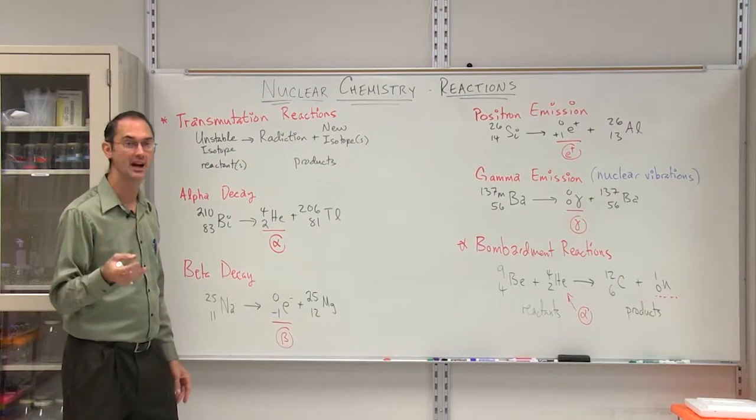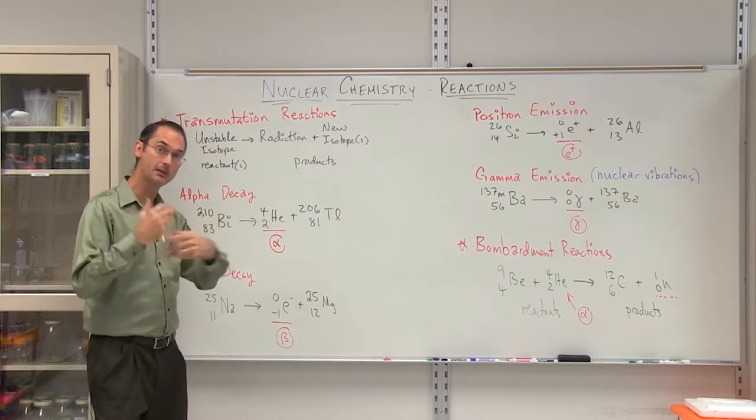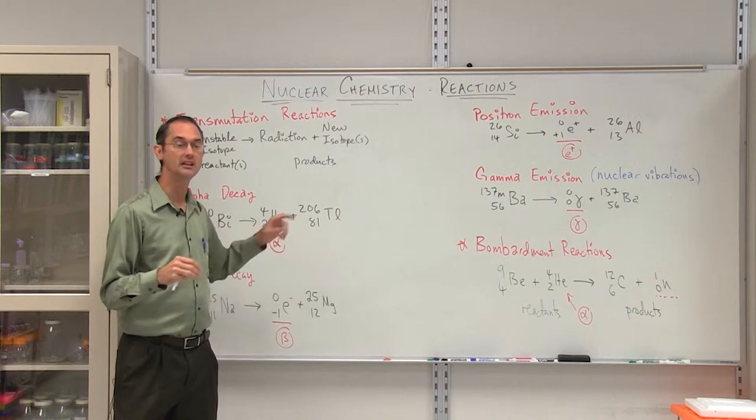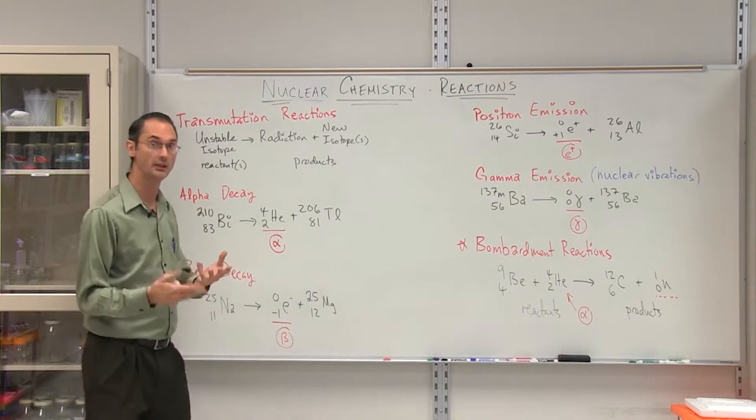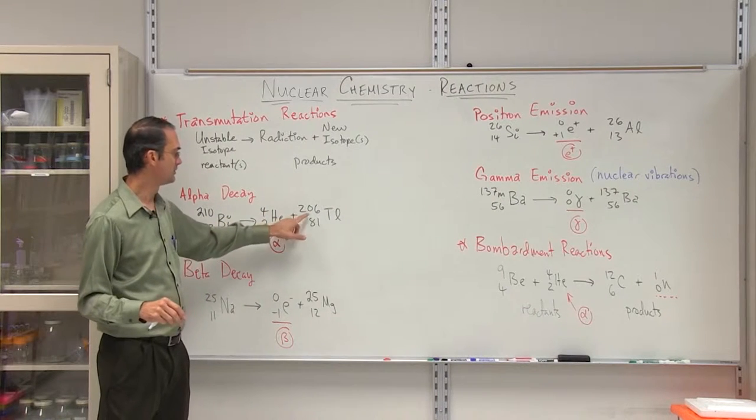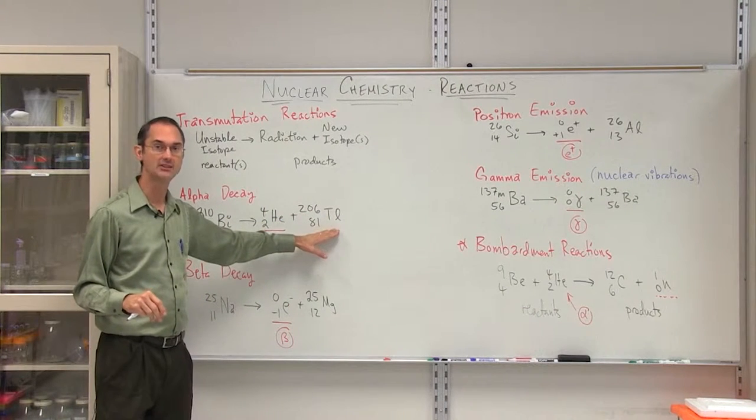Secondly, we have to find out what the atomic mass number is. Now the atomic mass number is going to help us find out whether the result itself is going to be stable or unstable in a nuclear sense. Here we have 210, we have to subtract 4, we end up with 206, and then we get this isotope of thallium.